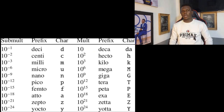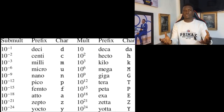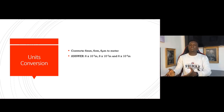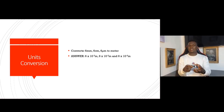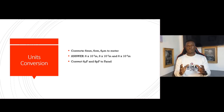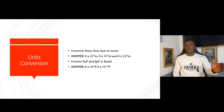You also have positive multiples. These help you convert in physics. For example, 6 millimeters = 6 × 10⁻³ m, 6 centimeters = 6 × 10⁻² m, 6 micrometers = 6 × 10⁻⁶ m. If asked to convert 6 microfarads and 8 picofarads to farads: micro is 10⁻⁶, so 6 × 10⁻⁶ F; pico is 10⁻¹², so 8 × 10⁻¹² F.